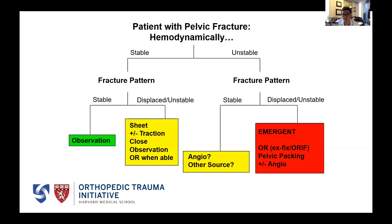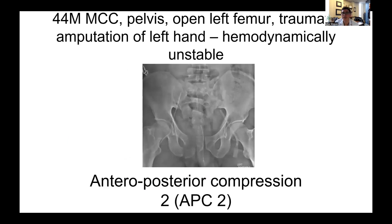Si llega un paciente hemodinámicamente estable con lesión pélvica estable, se monitorea y la mayoría se trata sin cirugía. Si el paciente estable tiene fractura desplazada, requiere reducción y puede necesitar sábana o tracción; si es inestable verticalmente, en el primer día o dos irá a quirófano. Si el paciente es hemodinámicamente inestable con fractura pélvica menor no desplazada, buscar otra fuente de sangrado; la angiografía puede ser útil. Si tiene un grave desplazamiento o lesión inestable del anillo pélvico con inestabilidad hemodinámica, requiere cirugía de emergencia: fijador externo emergente y luego taponamiento o angiografía según los recursos disponibles.